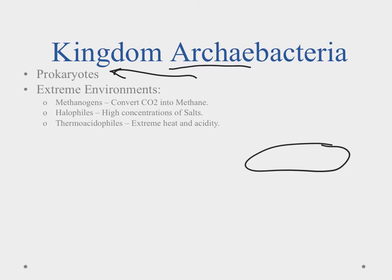The archaebacteria represent what we think life was like when it first originated on the planet. These organisms like to live in extreme environments. We have the thermoacidophiles, which like extreme heat and extreme acidity. We also have halophiles, which live in very salty areas with high concentrations of salt water. And then we have the methanogens, which convert carbon dioxide into methane. The archaebacteria are thought to be the closest living remnant of what life started as on our planet.